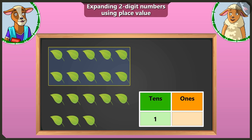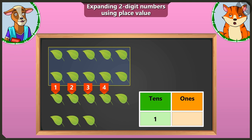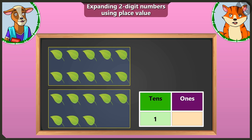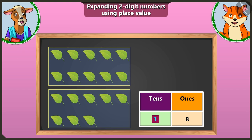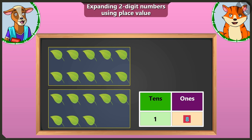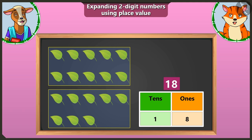Well done, Lily! Now I will count the remaining leaves: one, two, three, four, five, six, seven and eight. We will write the number eight in the ones box. Now tell me, one ten and eight ones make which number? One ten and eight ones make number eighteen. Well done, Billy!